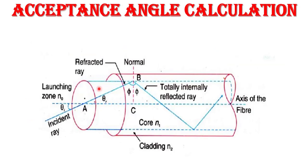Here we calculate the acceptance angle through derivation. We consider a longitudinal section of an optical fiber where the center region is called the core, having refractive index N1, and the outer region is called cladding, having refractive index N2. N1 is always greater than N2. The refractive index of the outer medium where light enters the fiber is N0, the refractive index of air. The end from where light enters is called the launching end.